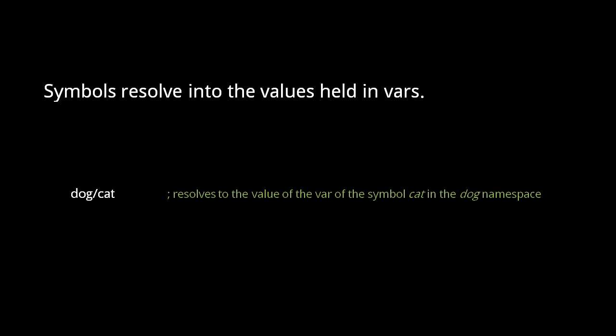A symbol containing a slash in the middle is fully qualified, meaning the part before the slash specifies the namespace. Here, dog slash cat refers to the var mapped to the symbol cat in the dog namespace. When a symbol contains no slash in the middle, it is resolved to a var of the current namespace.